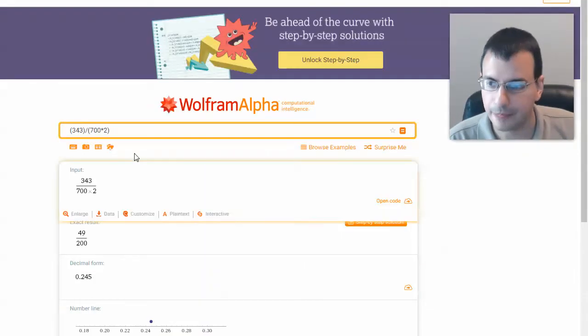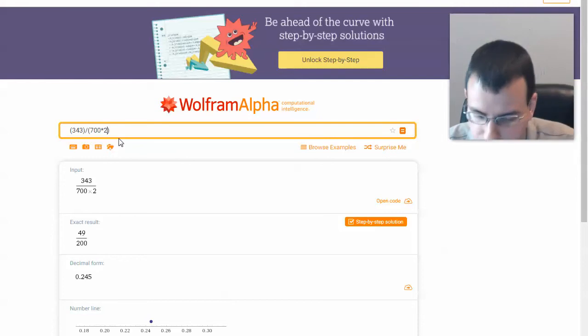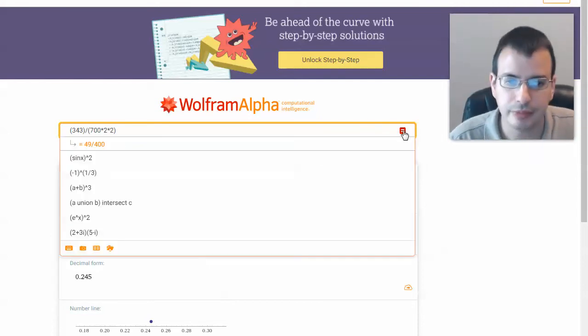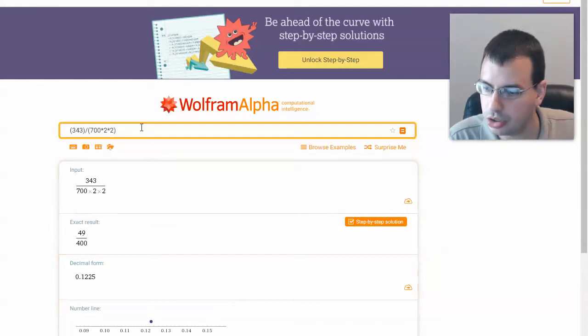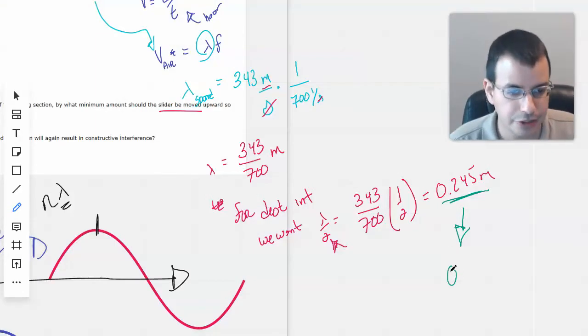So, what we're going to do then is, this is the amount of distance we need to create to get destructive interference. So we're going to do that and divide it by 2, which means back to Wolfram. And I'll just multiply another 2 on the bottom. And we get 0.1225.